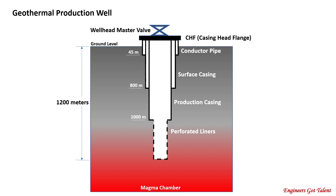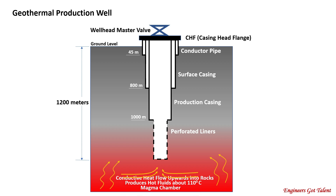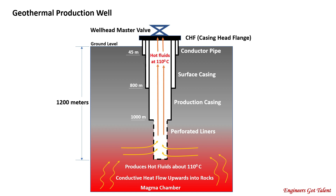The magma chamber produces heat and the heat flows upwards to heat up the rocks and formations above it by conductive flow. The heat continues to rise due to pressure and heats up any liquid or water along its way. These hot liquids or water, also called geothermal fluids, are channeled through cracks and fissures in the rock formation, thereby creating a geothermal reservoir. Hot geothermal fluids at 110 degrees Celsius enter the well through the perforated liners. Due to pressure, the fluids rise to the top and are directed to the preheater.